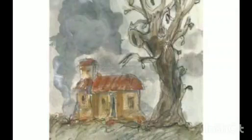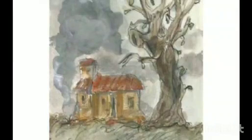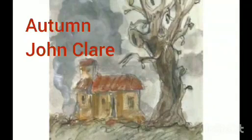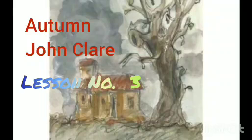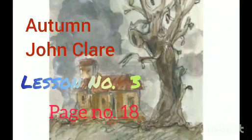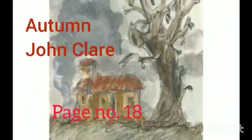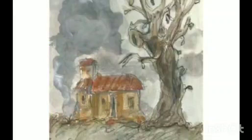Hello my dear student, welcome to my quarantine classroom. Today I am going to read the poem 'Autumn' written by John Clare, and it is there in your class 9 English syllabus, lesson number 3, page number 18. It is a beautiful poem written in four different stanzas describing the autumnal landscape.